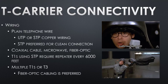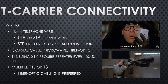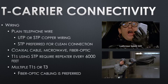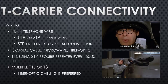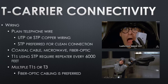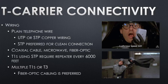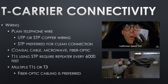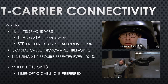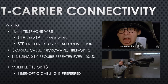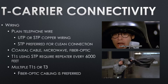T-carrier infrastructure can be shielded or unshielded, goes a bit farther when shielded, and can be run over coax, microwave transmitters, or fiber optics. It's basically a protocol — a language, not just a physical medium. Multiple T1s can be bonded together, and T3 aggregates multiple T1s.